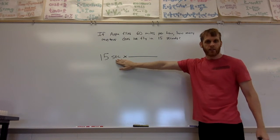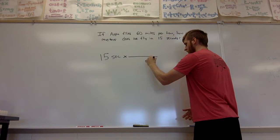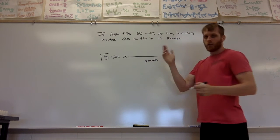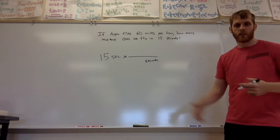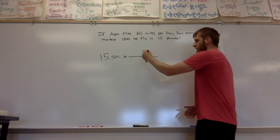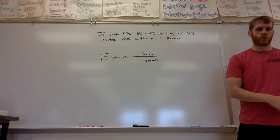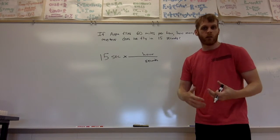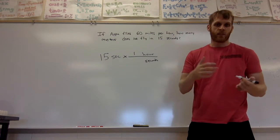I want to get rid of seconds, so it should go on the bottom. The thing I want to replace seconds with goes on the opposite side on top, which would be hours. Now here's where the conversion comes in. How many seconds are in an hour? Well, one hour is 3600 seconds.